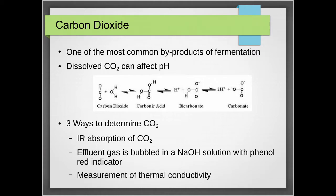Carbon dioxide concentration in your culture increases because CO2 is one of the byproducts of fermentation. When CO2 dissolves in water — especially for submerged fermentation — it produces carbonic acid, which can also lower the pH. Although carbonic acid is technically a buffer, it can still lower your pH. Several ways to determine your carbon dioxide content include IR absorption or checking the effluent gas in a manner similar to gas chromatography, and measurement of thermal conductivity.